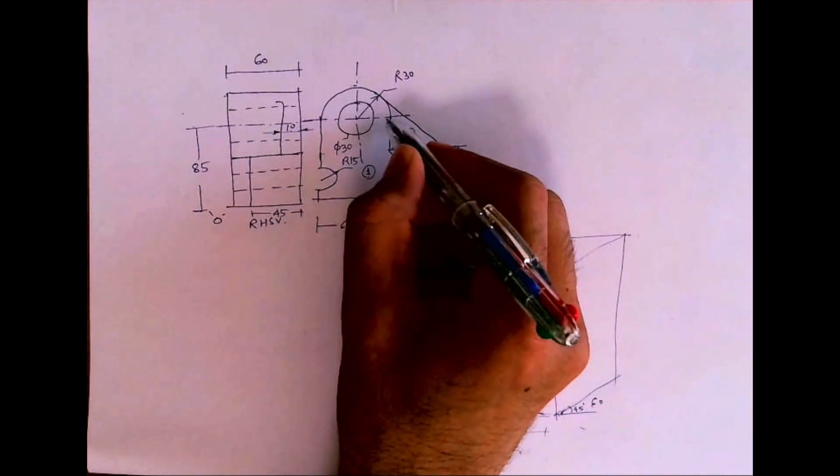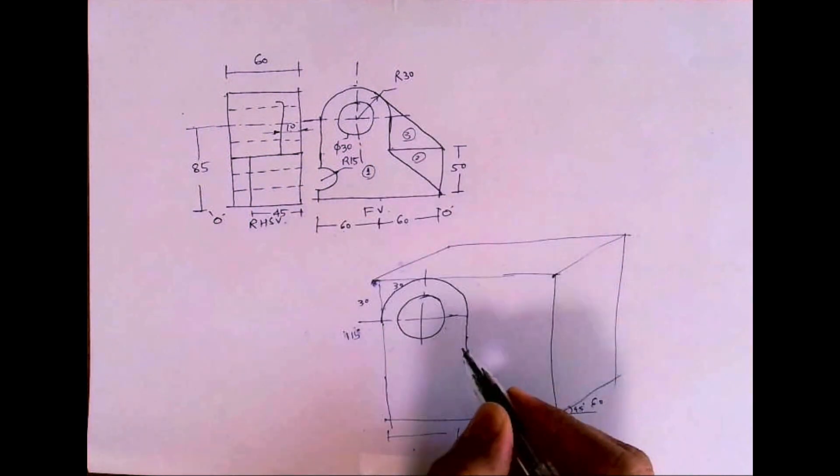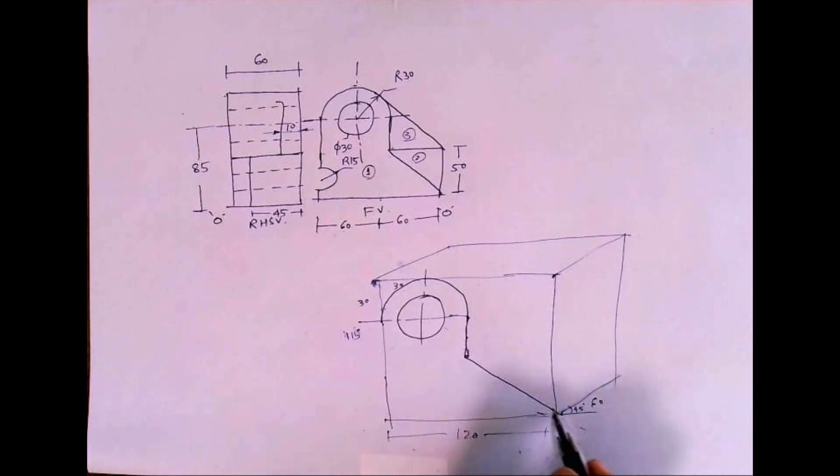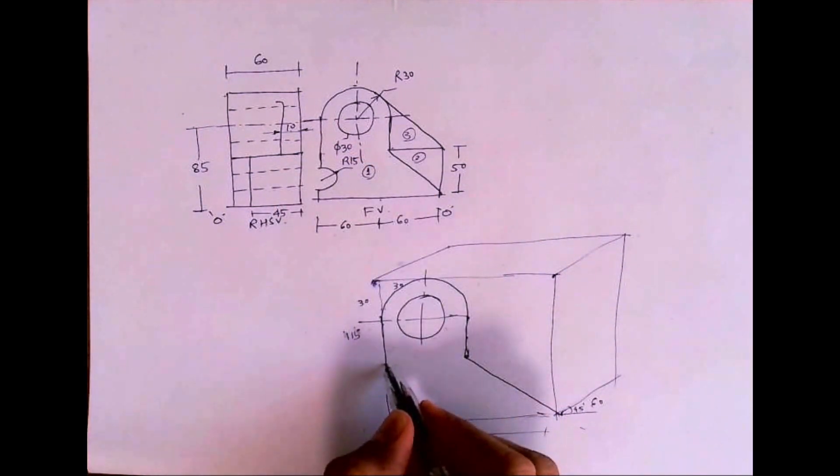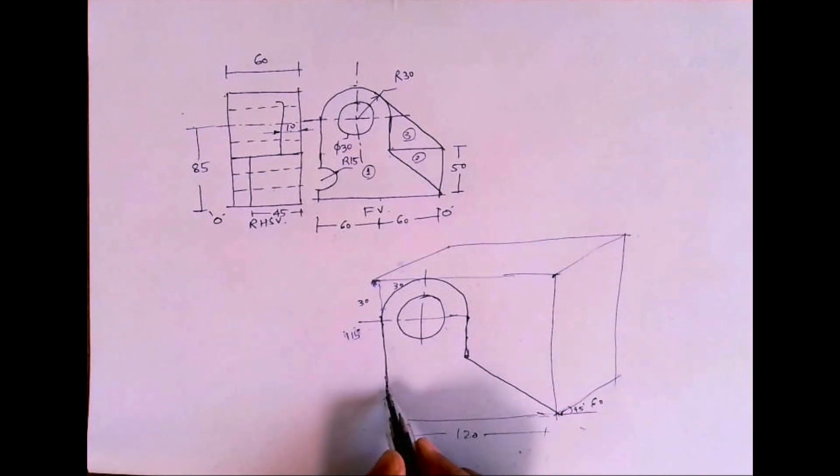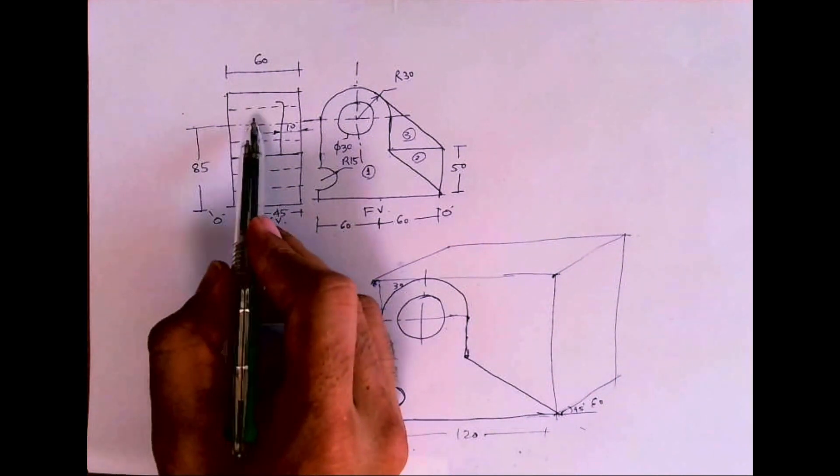After that, from here you go down. You can calculate, then you join this with this corner. Same way, here find out the center point for the circle and draw a line like this.